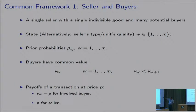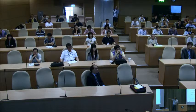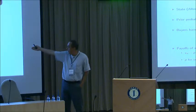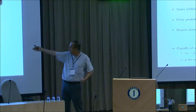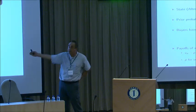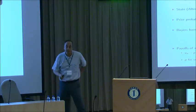The states are ordered so that the value of state W plus one is greater than the value of state W. The payoff of a transaction at price P is V minus P for the involved buyer. If a buyer gets the good at price P, that is their payoff, and the seller gets a payoff of P.